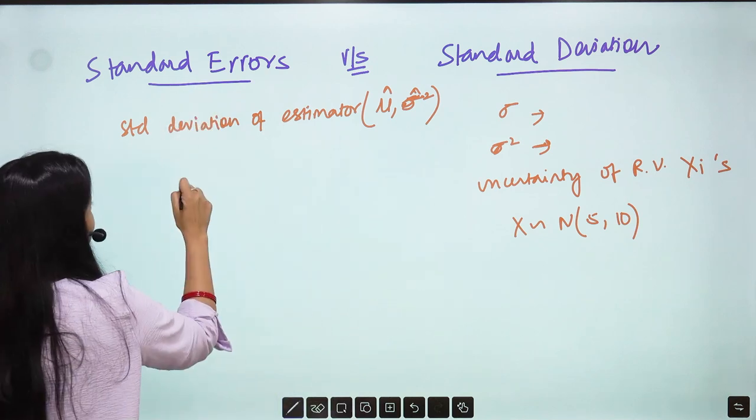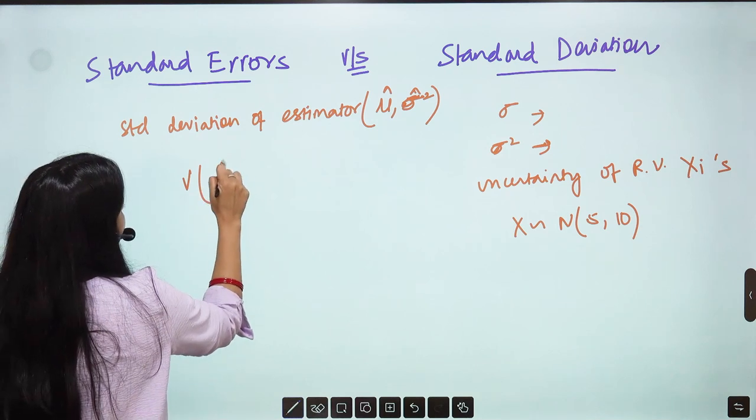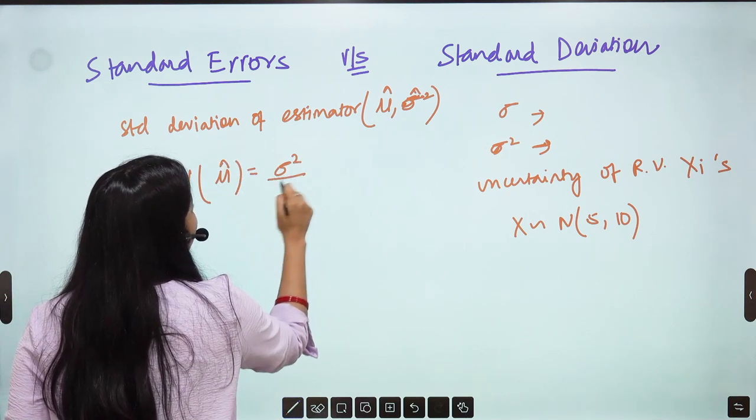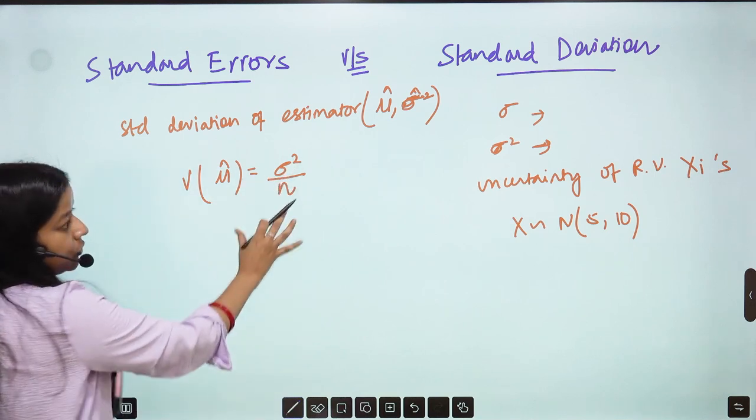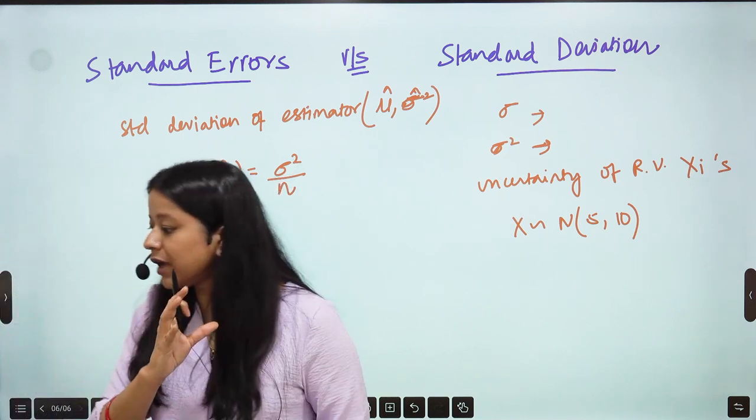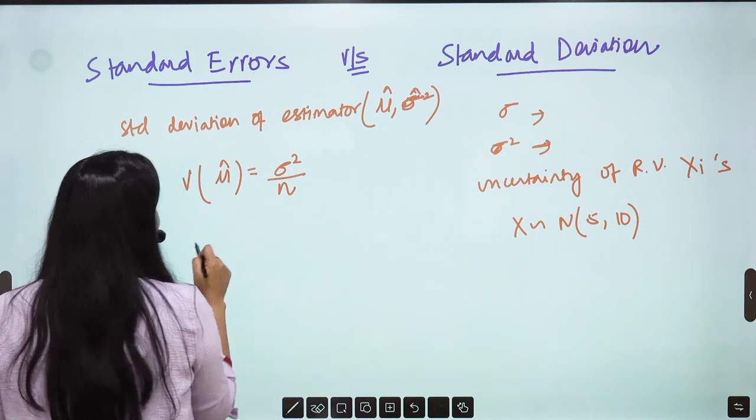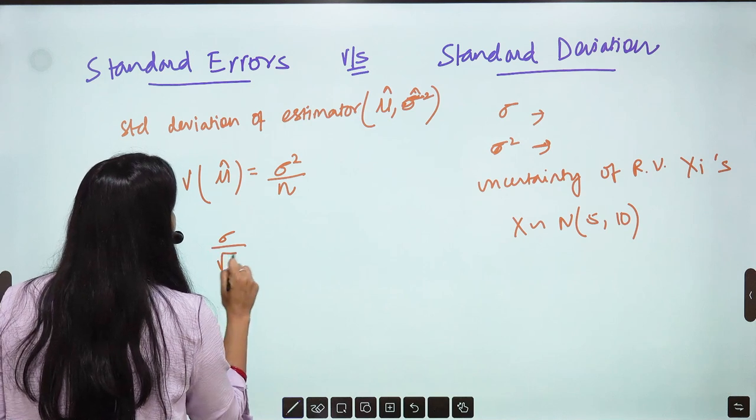If you remember, we took out variance of mu hat. Do you remember what it was? Sigma square by n. We took out this entire thing, we proved this just now. Or if you take its Standard Deviation, it becomes Sigma by root n.